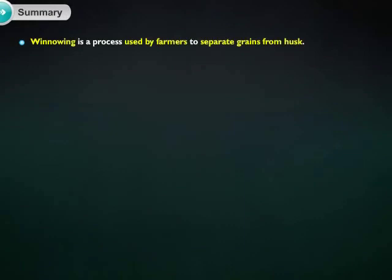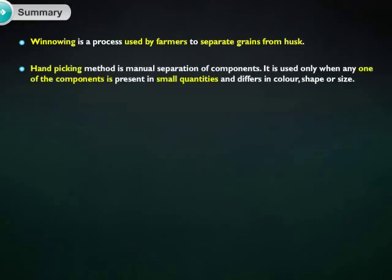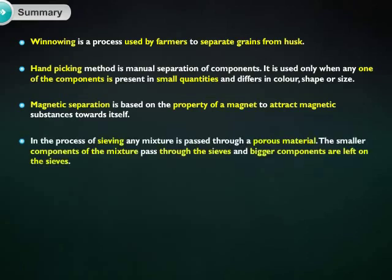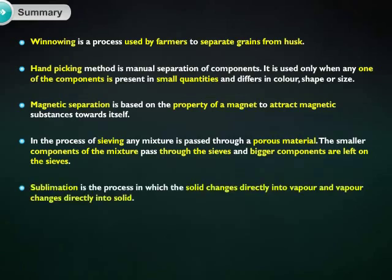Winnowing is a process used by farmers to separate grains from husk. Handpicking method is manual separation of components — it is used only when any one of the components is present in small quantities and differs in color, shape, or size. Magnetic separation is based on the property of a magnet to attract magnetic substances towards itself. In the process of sieving, any mixture is passed through a porous material; the smaller components pass through the sieves and bigger components are left on the sieves. Sublimation is the process in which the solid changes directly into vapor and vapor changes directly into solid.